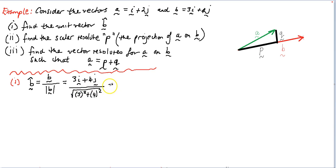So this is going to be equal to 3I plus 4J over 3 squared is 9, 4 squared is 16, 9 plus 16 is 25. So that's going to be the square root of 25, which is really lucky because that works out to be 3 fifths I plus 4 fifths J.